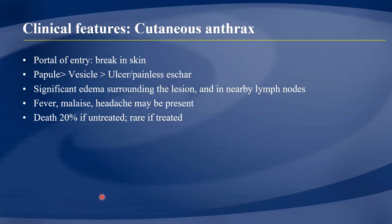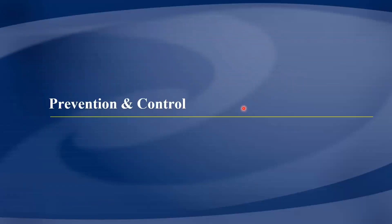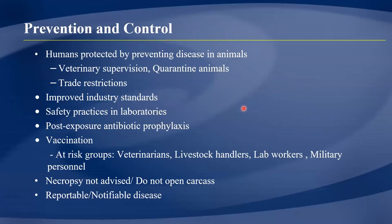Cutaneous anthrax presents with skin manifestations along with fever, malaise, and headache; nearby lymph nodes become inflamed. Gastrointestinal anthrax presents with nausea, anorexia, vomiting, fever, abdominal pain, and bloody stools or diarrhea.